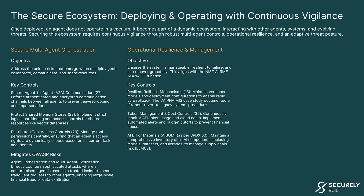Second is operational resilience and management. The objective is to ensure the system is manageable, resilient to failure, and can recover gracefully. Key controls include resilient rollback mechanisms — maintaining versioned models and deployment configurations to enable rapid, safe rollback. You also want token management and cost controls, continuously monitoring API token usage and cloud costs with automated alerts and budget cutoffs. And maintain an AI bill of materials, which is a comprehensive inventory of all AI components to manage supply chain risk.